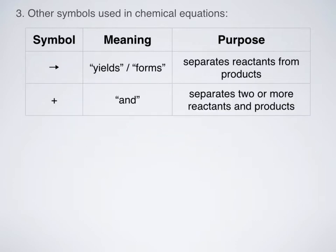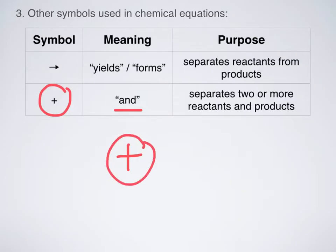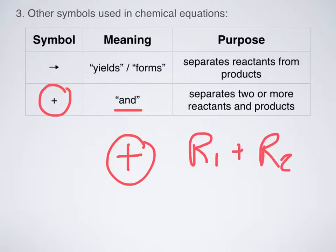Next, we have the plus sign, which can basically be read as 'and.' So if you see a plus, you can read that verbally as just 'and' — you don't say plus, you say and. Its purpose is to separate two or more reactants and/or products. So that's why we have reactant 1, then a plus sign, then reactant 2 — reading it as 'reactant 1 and reactant 2.'